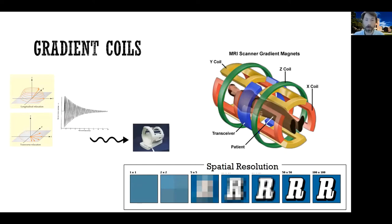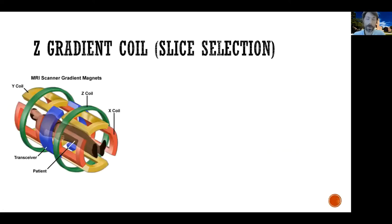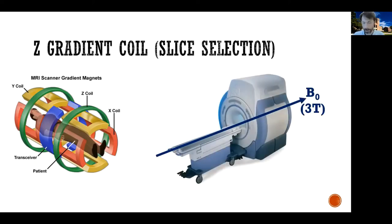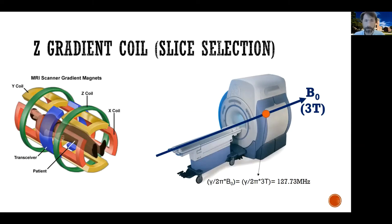There are three gradient coils, one per direction. There's a gradient coil for the Z direction, one for X, and one for Y. The first is often referred to as the slice selection gradient coil, typically in the Z direction — from feet to head. Now, take our MRI machine: in the typical research case they are at three Tesla. From the Larmor equation, you know the resonating frequency is the gyromagnetic constant over two pi times the strength of the magnetic field.